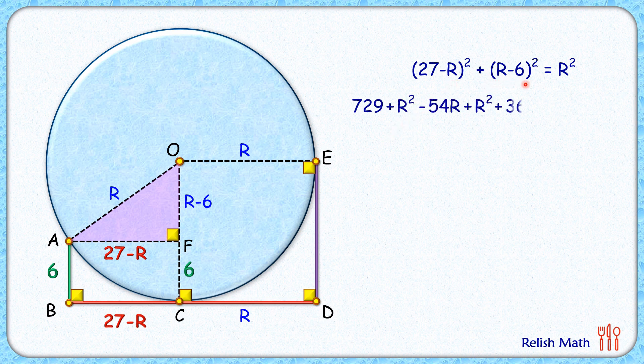Now both sides, R squared will get cancelled. This R squared is still left. Simplifying it, we get a quadratic in terms of R.